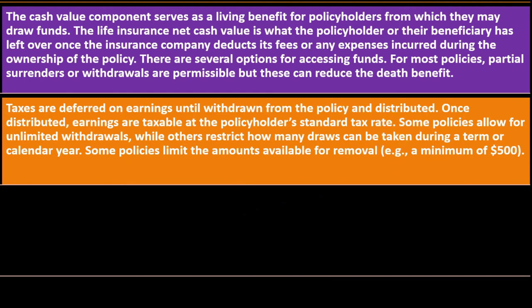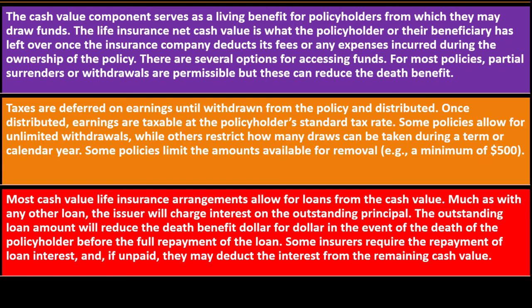Some policies limit the amounts available for removal, such as a minimum of $500. Most cash value life insurance arrangements allow for loans from the cash value. The issuer will charge interest on the outstanding principal, and the outstanding loan amount will reduce the death benefit dollar for dollar in the event of the policyholder's death before full repayment of the loan.